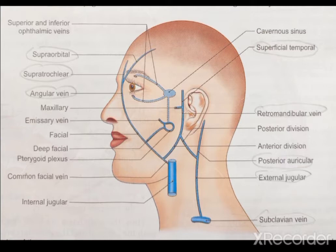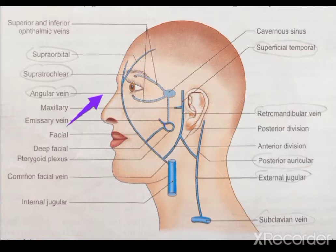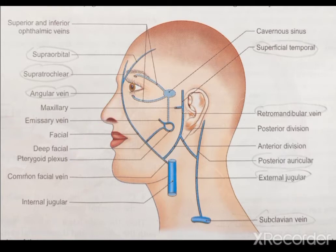The supratrochlear and supraorbital veins unite at the medial angle of the eye, forming the angular vein. As you can see, the supraorbital vein and the supratrochlear vein both combine to form the angular vein, which continues downward as the facial vein.